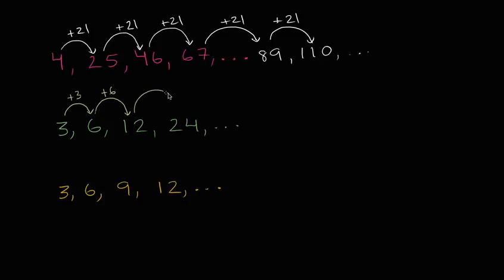And then to get from 12 to 24, I'm not adding six anymore, I added 12. So every time, I'm adding twice as much. But maybe an easier pattern might be, another way to go from three to six isn't to add three, but to multiply by two.